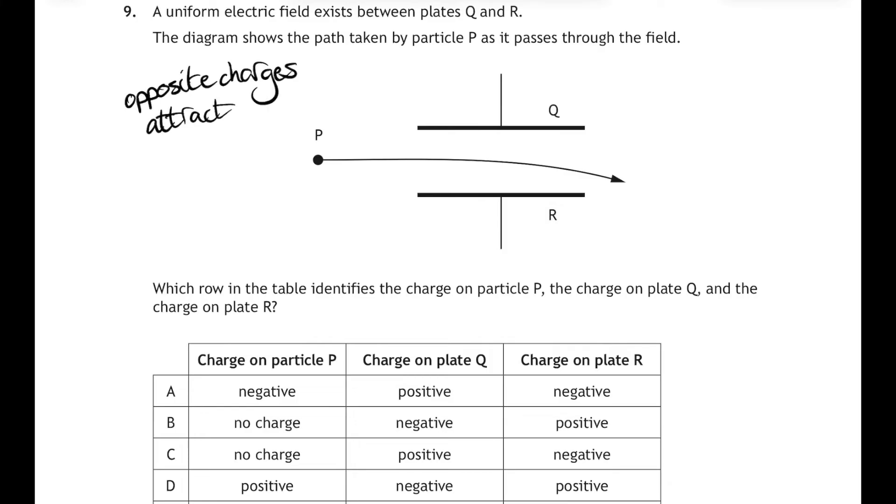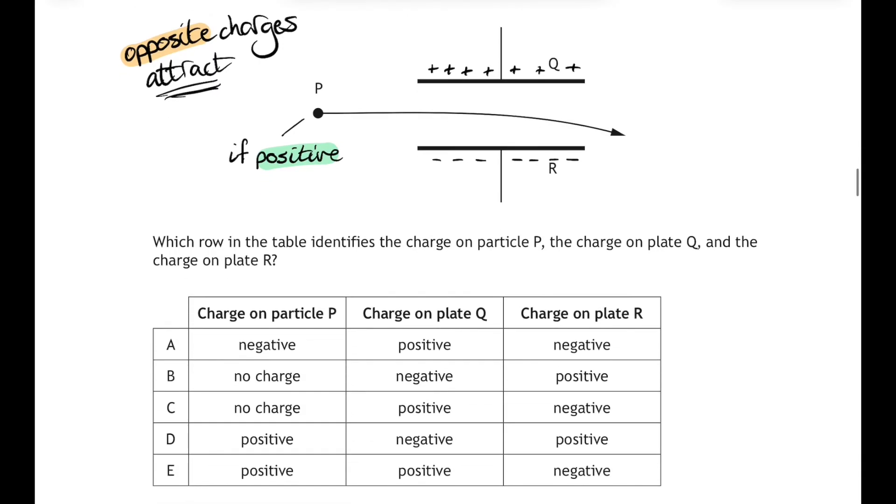Well, the thing to remember here is that opposite charges will attract each other. So if particle P was positive, then because particle P is being attracted downwards, then plate R would be negative and plate Q would be positive. Now let's see if that corresponds to any of the rows in the table. If P is positive, two possibilities there, then Q would be positive and R would be negative, so that all works out. That's answer E. Now we could try it the other way around—we could see what happens if P is negative.